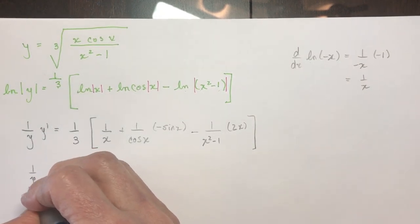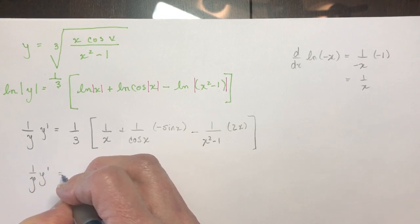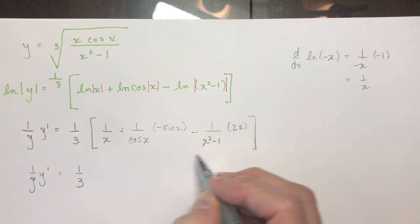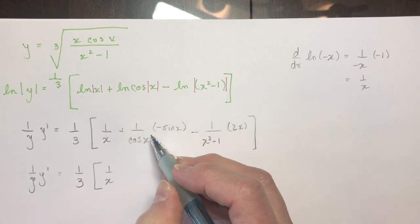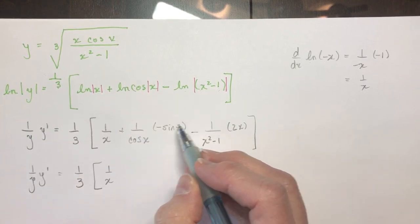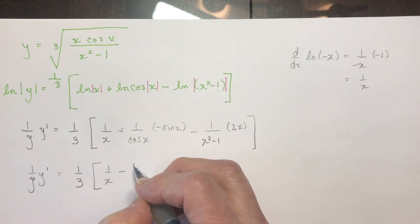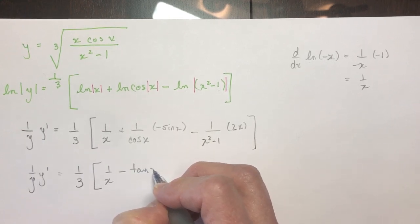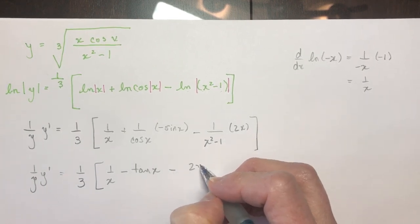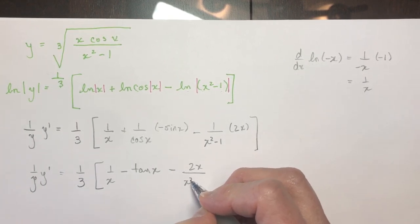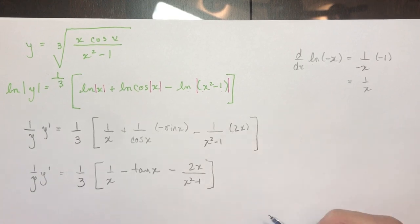So I'm going to just leave this one over y, y prime. And I'm going to straighten this up a little bit. So I have one over x. And negative sine x over cos x is the negative of tan x. It's an identity. And this I just have a 2x over x squared minus one.